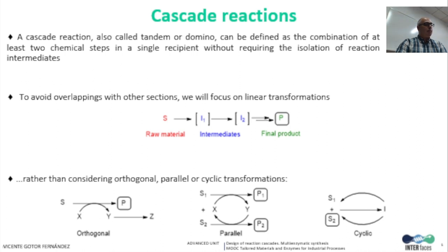In this context, there are several cascade types, such as orthogonal — generally allowing shifting of the reaction equilibrium — parallel, producing two different reaction products, and cyclic, such as the racemization strategies to produce enantiopure compounds from racemates. To avoid overlapping with other sections, here we will focus on linear transformations where the product of one step serves as the starting material for the next one, thus increasing molecular complexity.